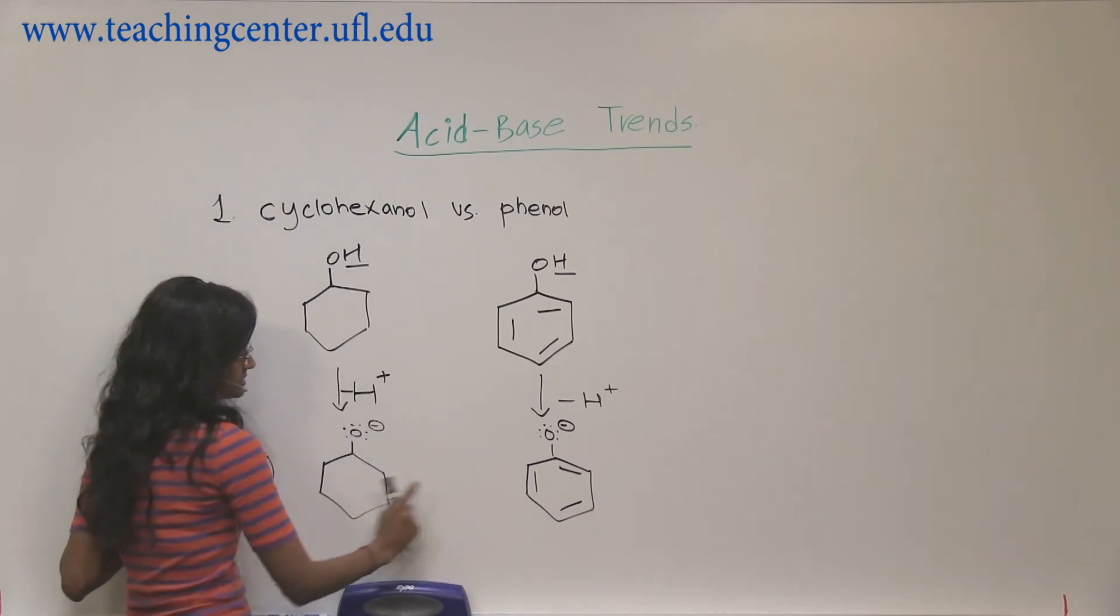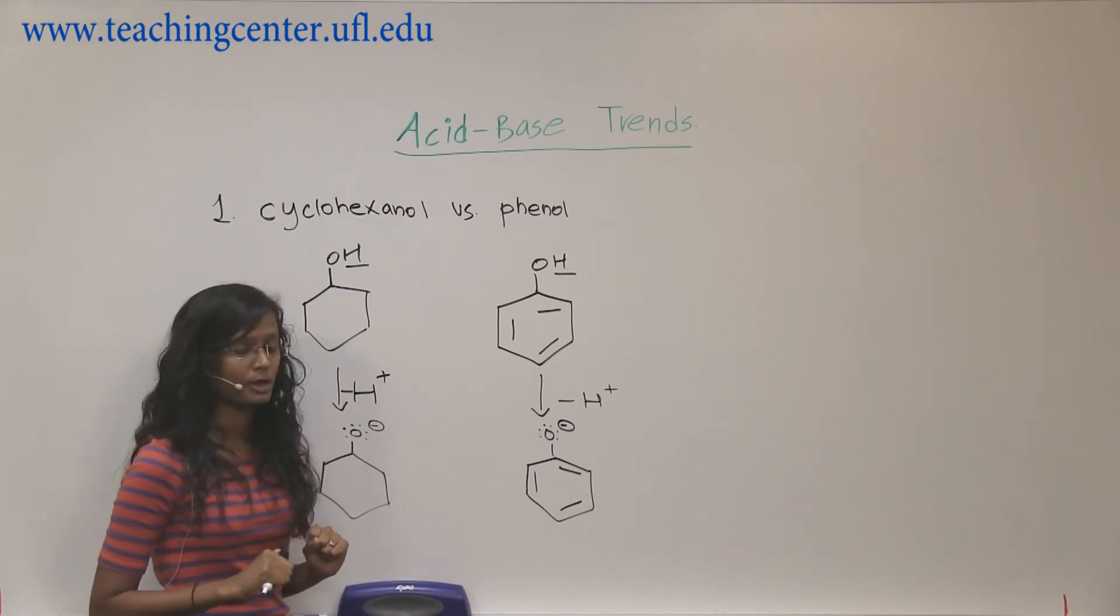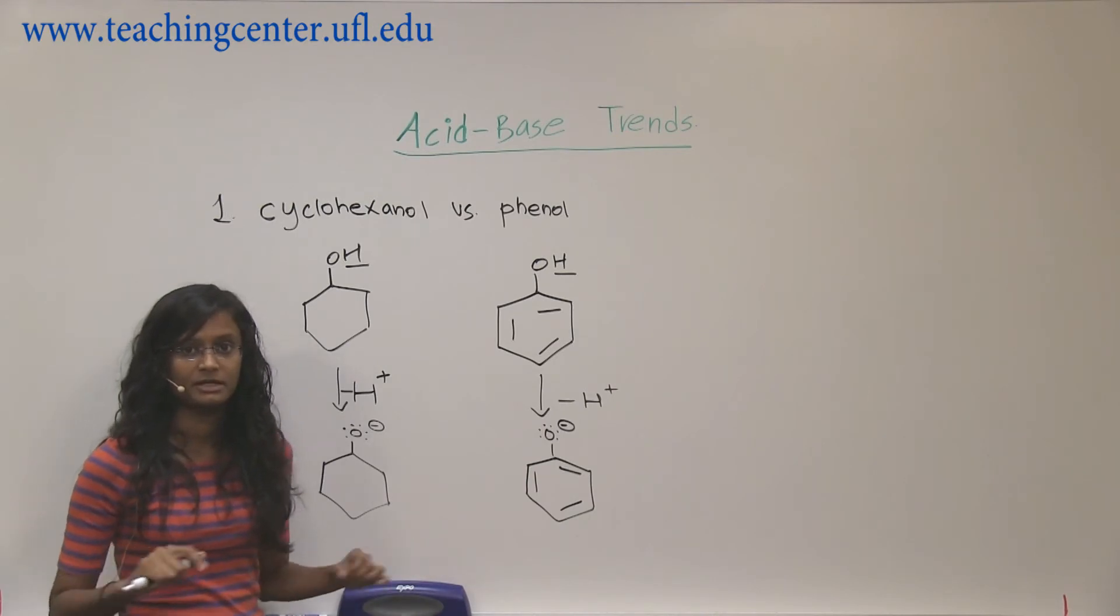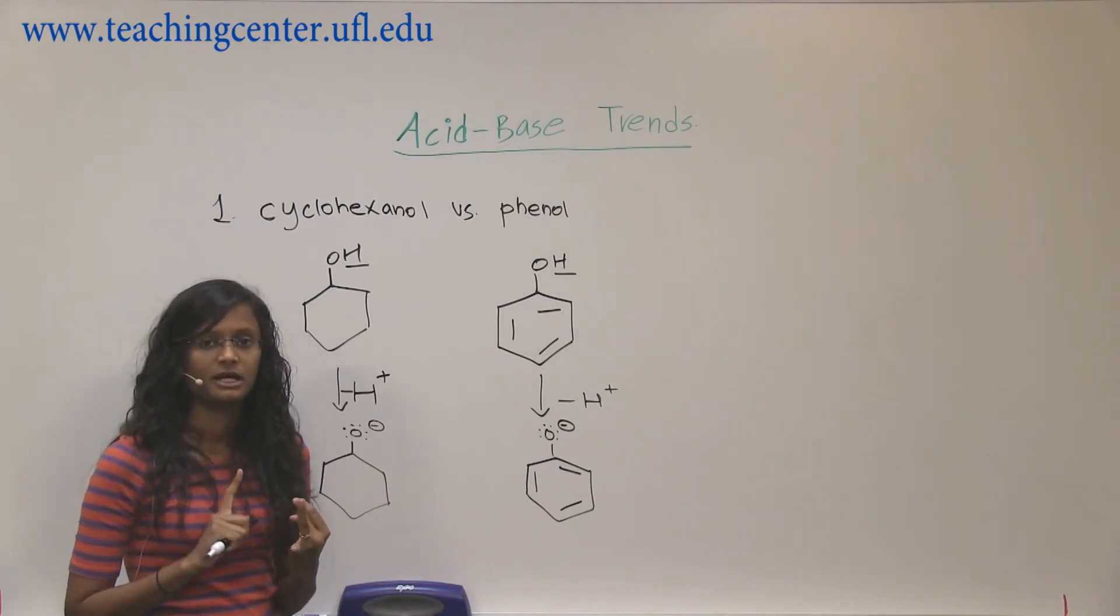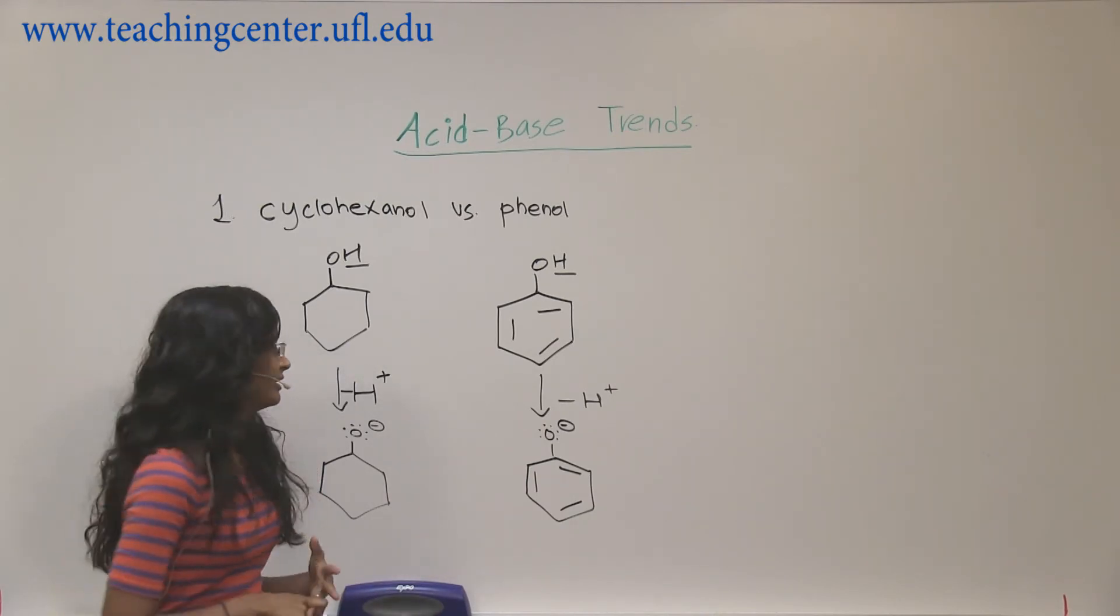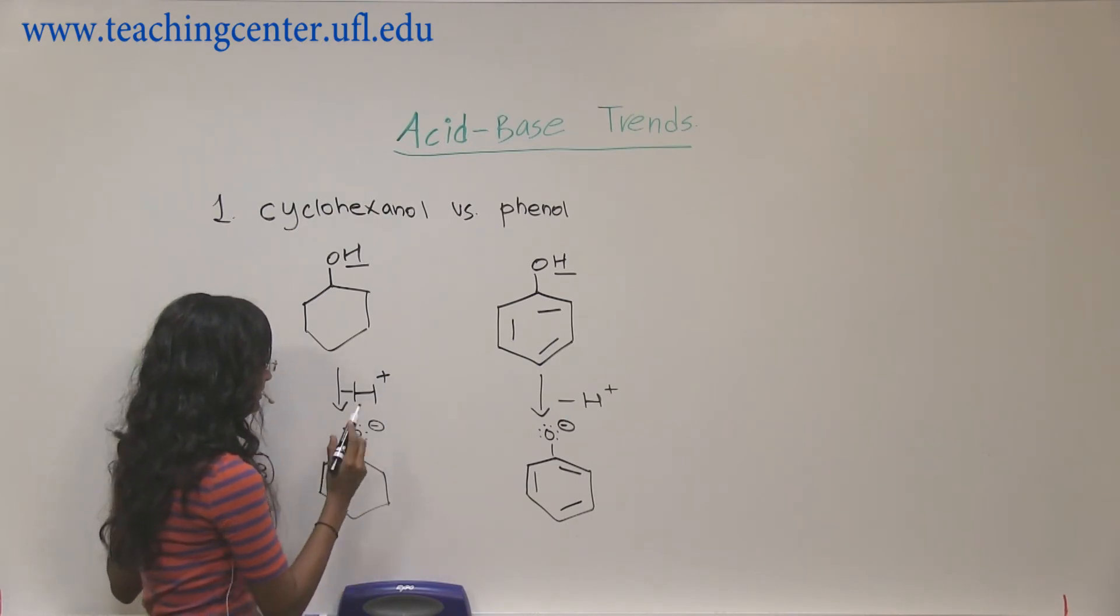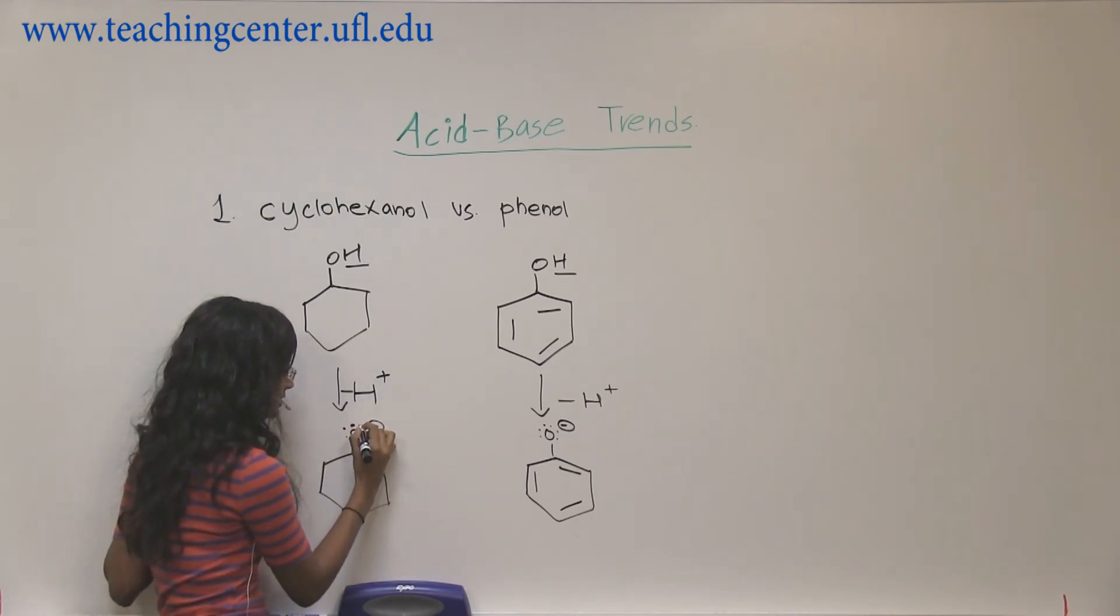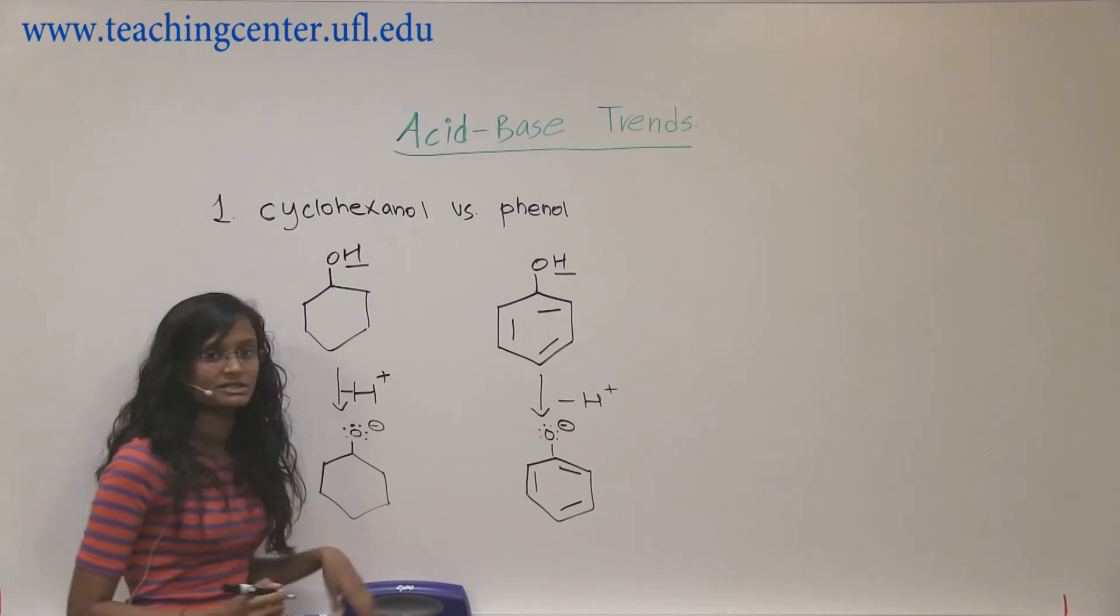So, we need to find a weaker conjugate base, which means more stable conjugate base, so that the acid it came from becomes more acidic. All right, so let's evaluate these two. Our protocol is still going to be the same. Size, electronegativity, resonance, and inductive effect.